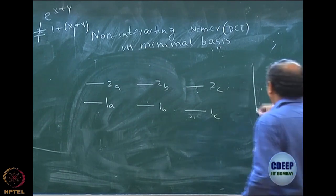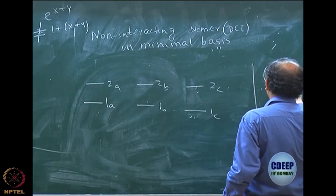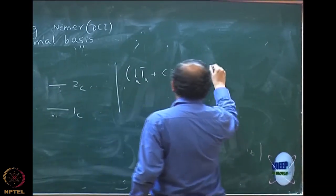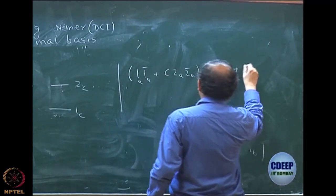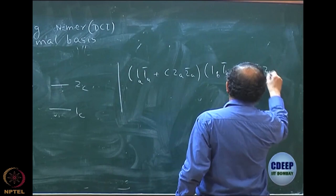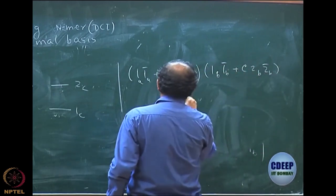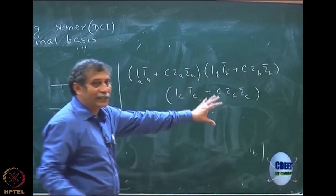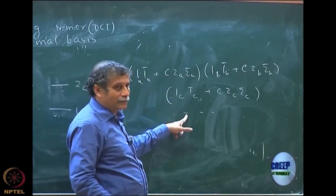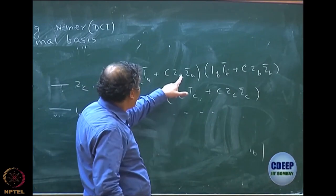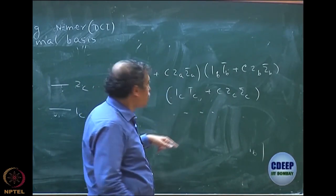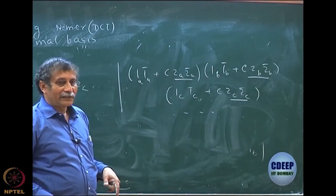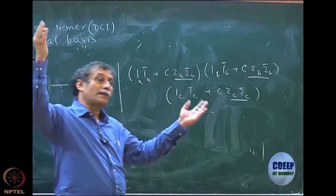So if you look at the wave function, it will have |1A, 1Ā⟩ + C|2A, 2Ā⟩, then again |1B, 1B̄⟩ + C|2B, 2B̄⟩, and so on into |1C, 1C̄⟩ + C|2C, 2C̄⟩ and so on. All these n terms will be there. The first term is of course Hartree-Fock — no problem. Then you can pick out the doubly excited terms, but there will be terms like hexadruple excitations, which will be missing.